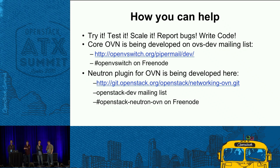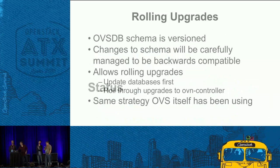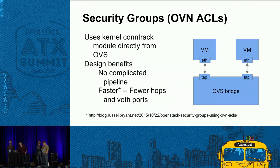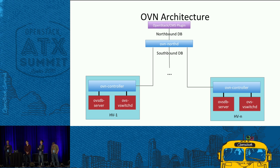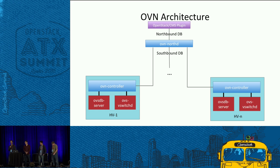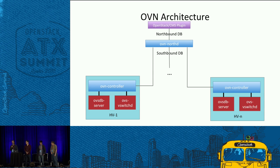Question: What is the design consideration for having NorthD hosted centrally versus pushing that translation directly onto the OVN controller? The design came from deferring to experience of people who had built controllers at Nasera and VMware. Our first design had all hypervisors pulling from the northbound database directly, but people who had worked on NVP and NSX said that won't work. It took a long time to get convinced, but the reasoning is documented.